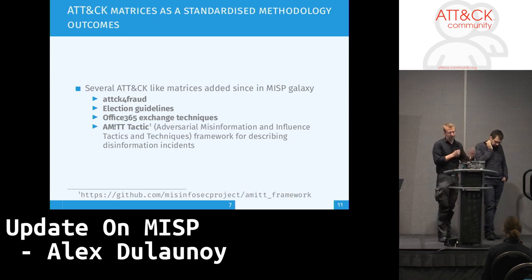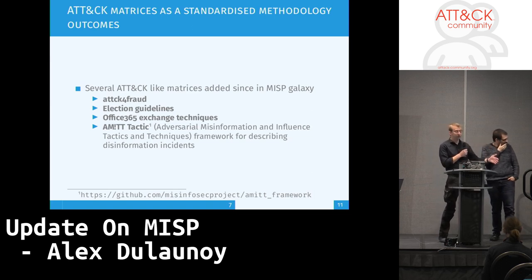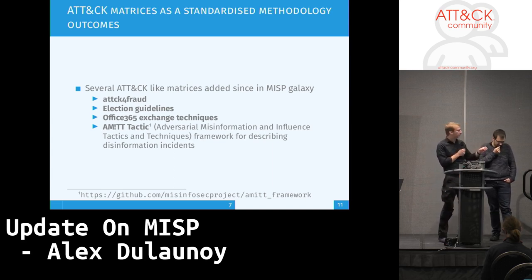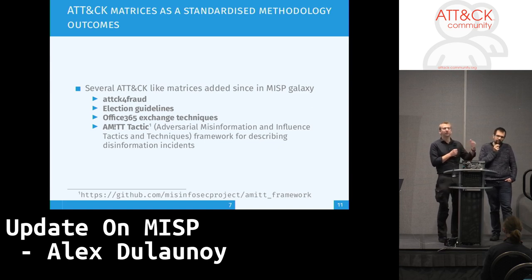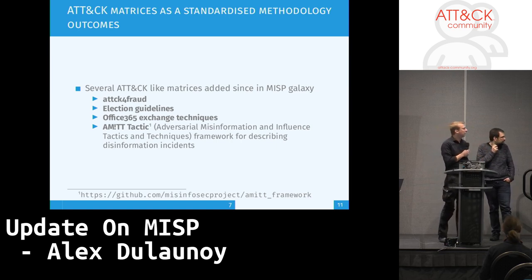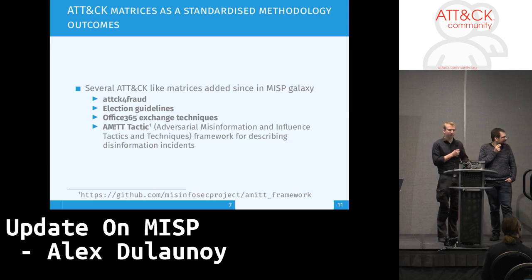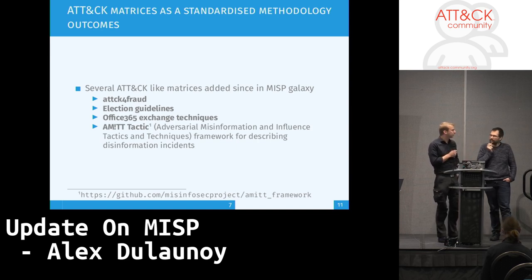ATT&CK for Fraud is the first one that was basically triggered by ING for the financial fraud — we already get excellent contributions on that one. And now we have additional ones. For example, this one about elections: it has been the mapping of the existing working group at the European Commission that was talking about elections — it's basically the exact mapping. John Lambert from Microsoft did an excellent list of Office 365 Exchange techniques describing the different steps to gain access to Office 365, so we basically just used his Excel sheet and mapped it into this. Recently, we got a contribution for AMITT — a really nice model to map misinformation. There are some interesting use cases there and it's a first step to see how we can work on that.